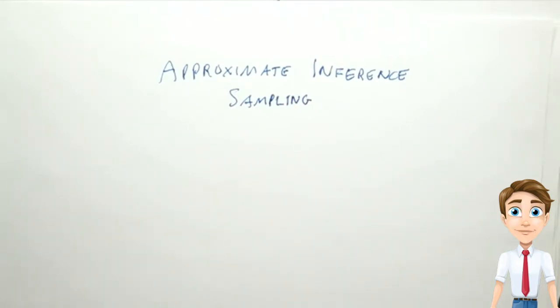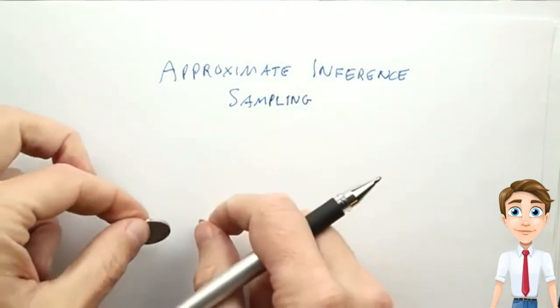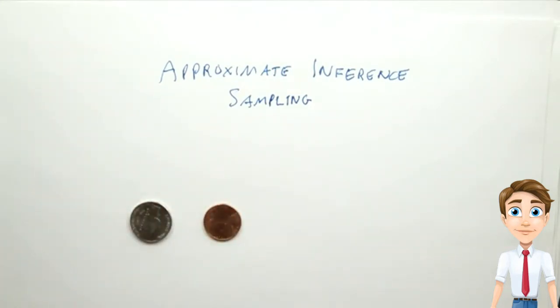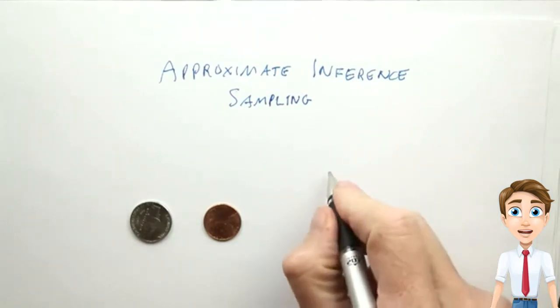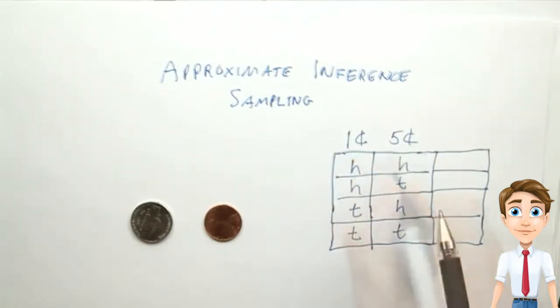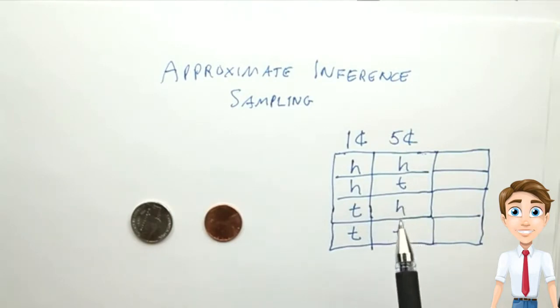Say we want to deal with a joint probability distribution, say the distribution of heads and tails over these two coins. We can build a table and then start counting by sampling.